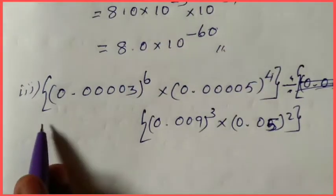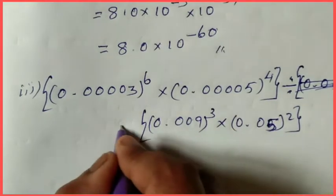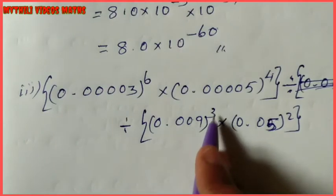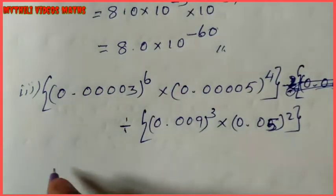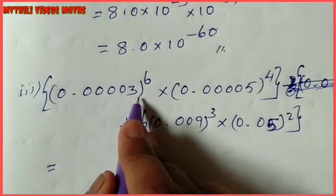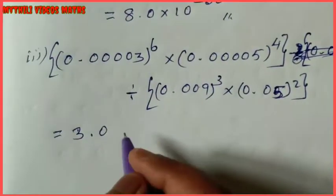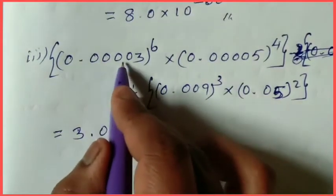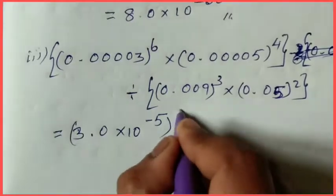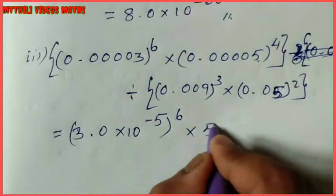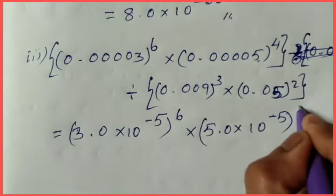Now the third subdivision: (0.0003)^6 × (0.0005)^4, divided by (0.009)^3 × (0.05)^2. First, convert each number to scientific notation. 0.0003 = 3.0 × 10 power minus 4, and 0.0005 = 5.0 × 10 power minus 4.